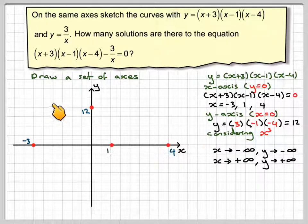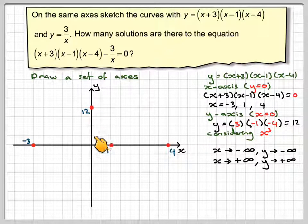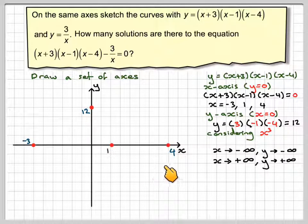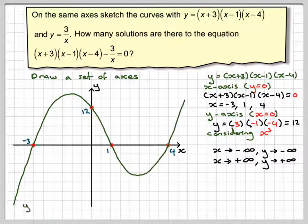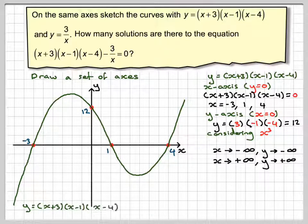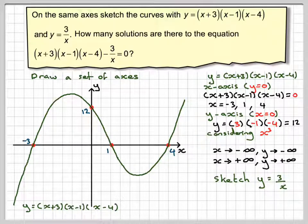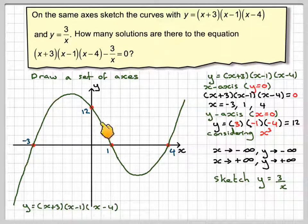The graph will come up here, go slightly higher than 12, come back down through 1, a minimum there, and up here. So I draw my curve, label at one end. The reciprocal function we should know is going to be like this.